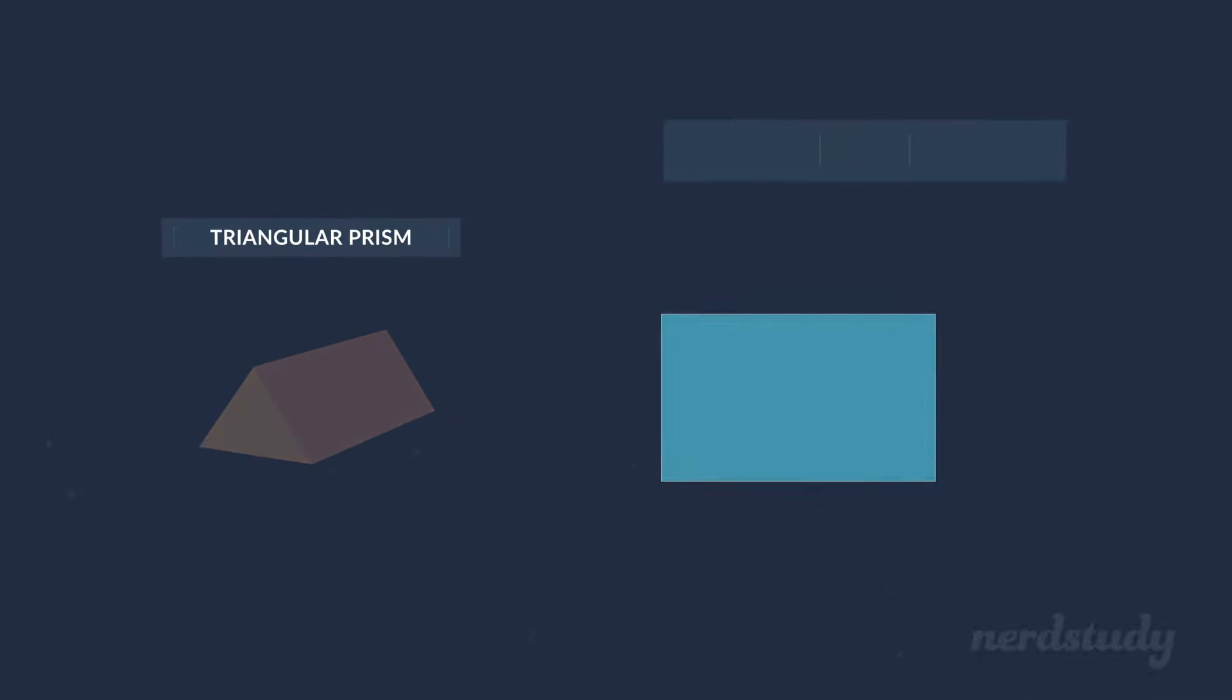Alright, so let's explore the surface area and volume of prisms. Here are two common types of prisms: a triangular prism and a rectangular prism.